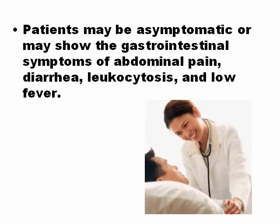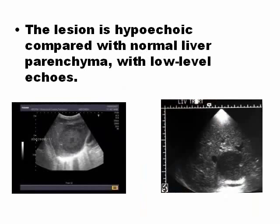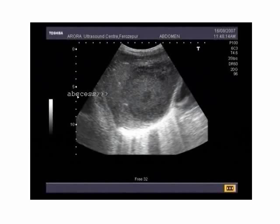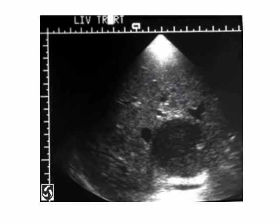The amoebic abscess lesion is hypoechoic and more homogeneous than pyogenic abscess — this is one key difference. In general, amoeba produces a solitary abscess, whereas bacteria can produce multiple abscesses. The lesion is more homogeneous than pyogenic abscess, and you can see the amoebic abscess with posterior enhancement.